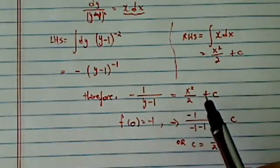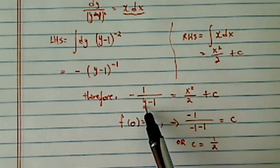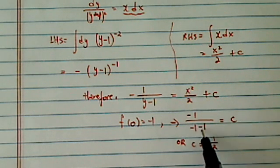So initial condition, plug it in there, and minus 1 here is minus 1 minus 1, and it becomes minus 2. So 1 over 2 becomes c, this side is equal to 0.